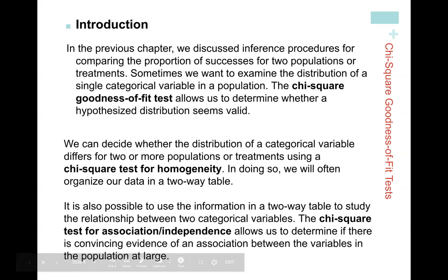Broadly, chi-square goodness of fit asks: does our sample fit some particular hypothesized or claimed distribution? With homogeneity, we look at two different populations — does the distribution of a categorical variable match across them? And the test for association/independence lets us determine if there's evidence of an association between variables within the population.